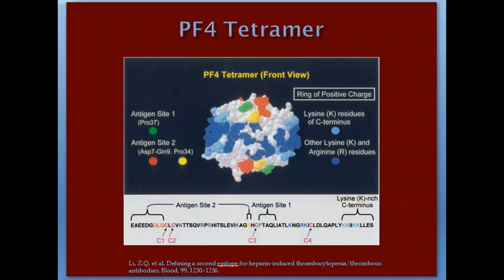Before we speak about the pathophysiology, we need to know more about the PF4 — the platelet factor 4 tetramer. Platelet factor 4 is a 70 amino acid protein, usually stored in the alpha granules within the platelets. It's one of the subfamily of chemokines, which is a signaling protein family. Four molecules of PF4 combine together forming this tetramer, and it's very rich in lysine and arginine, which makes the positive ring around it.